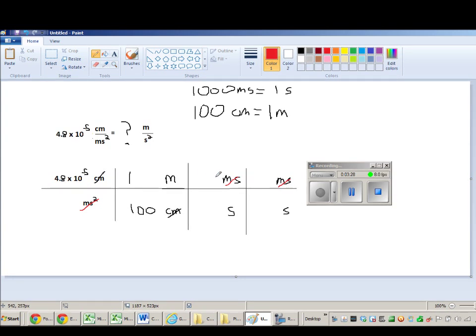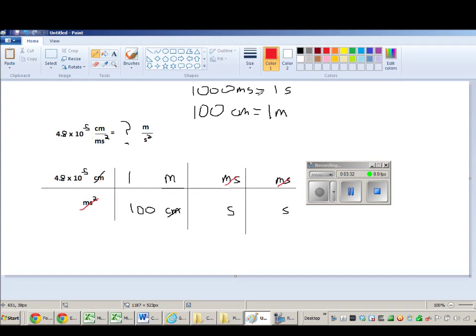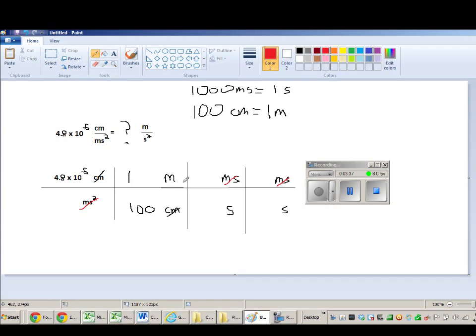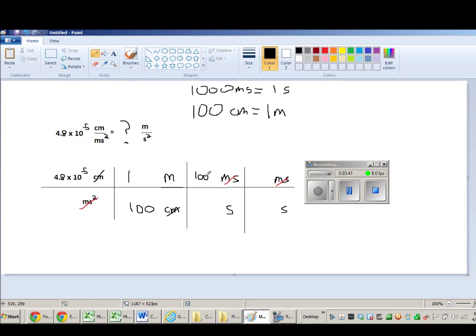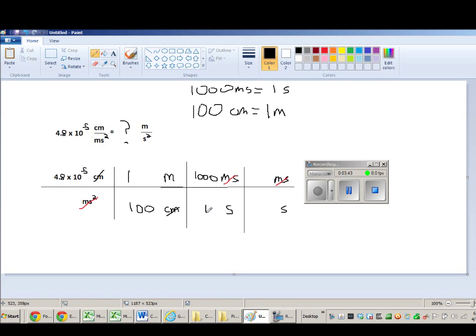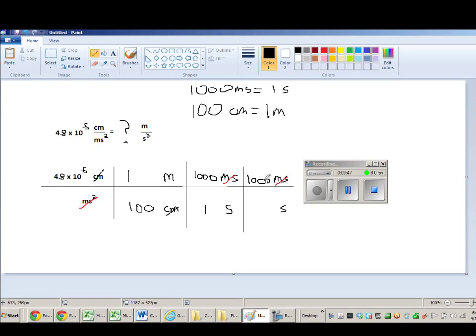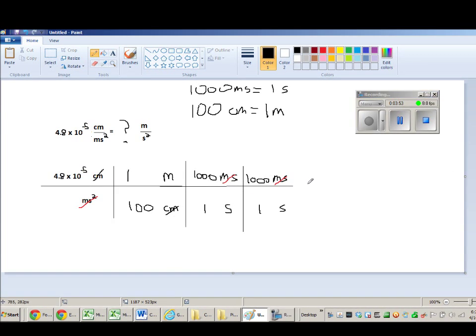I need to make sure I input the numbers correctly from the equivalent statement. So if I look at 1,000 milliseconds equals 1 second, I'm going to create a conversion factor of 1,000 milliseconds per 1 second, 1,000 milliseconds per 1 second.